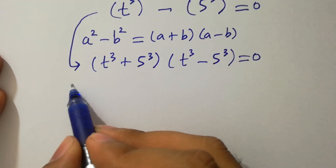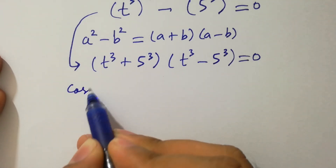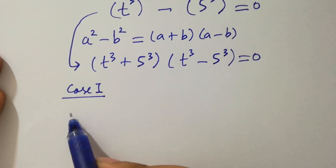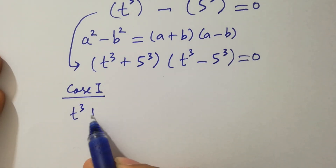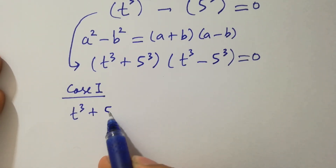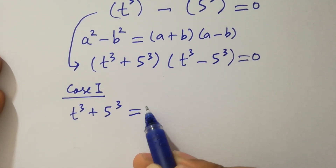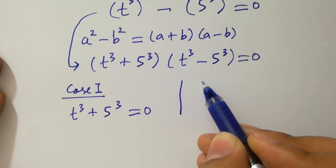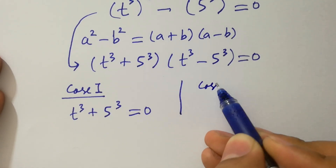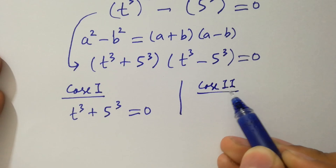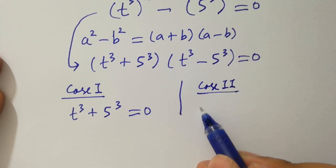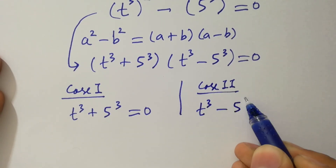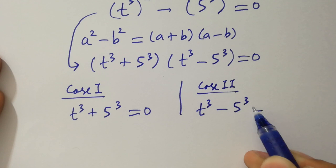Case 1 is t cubed plus 5 cubed equal to 0, and Case 2 is t cubed minus 5 cubed equal to 0.